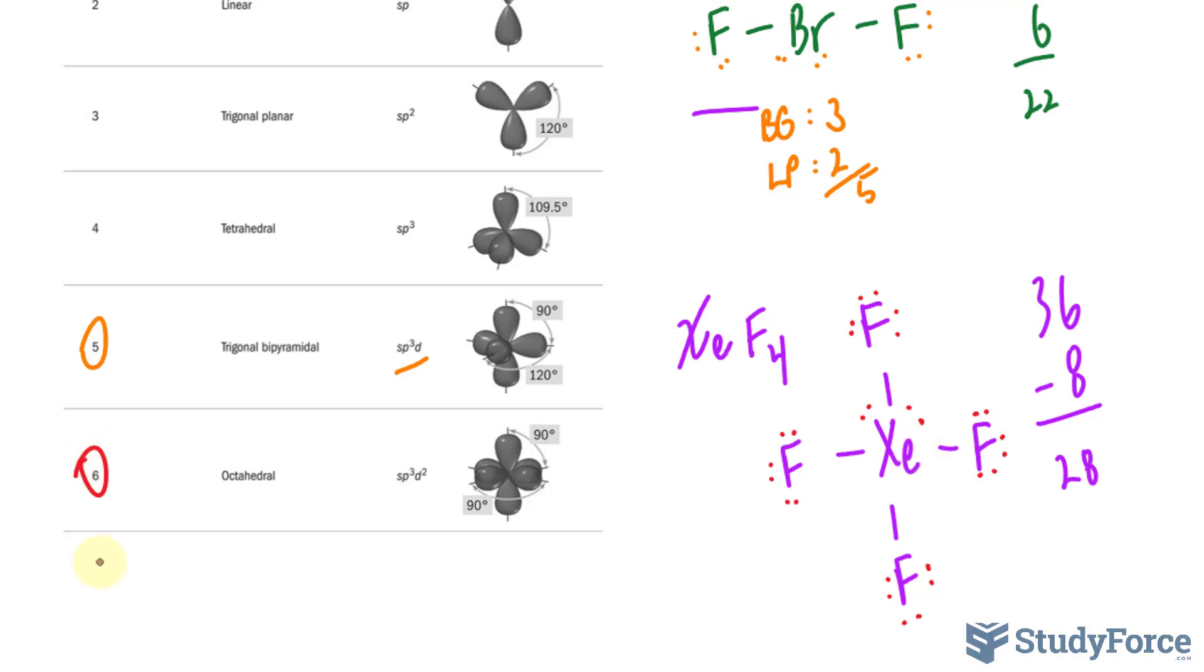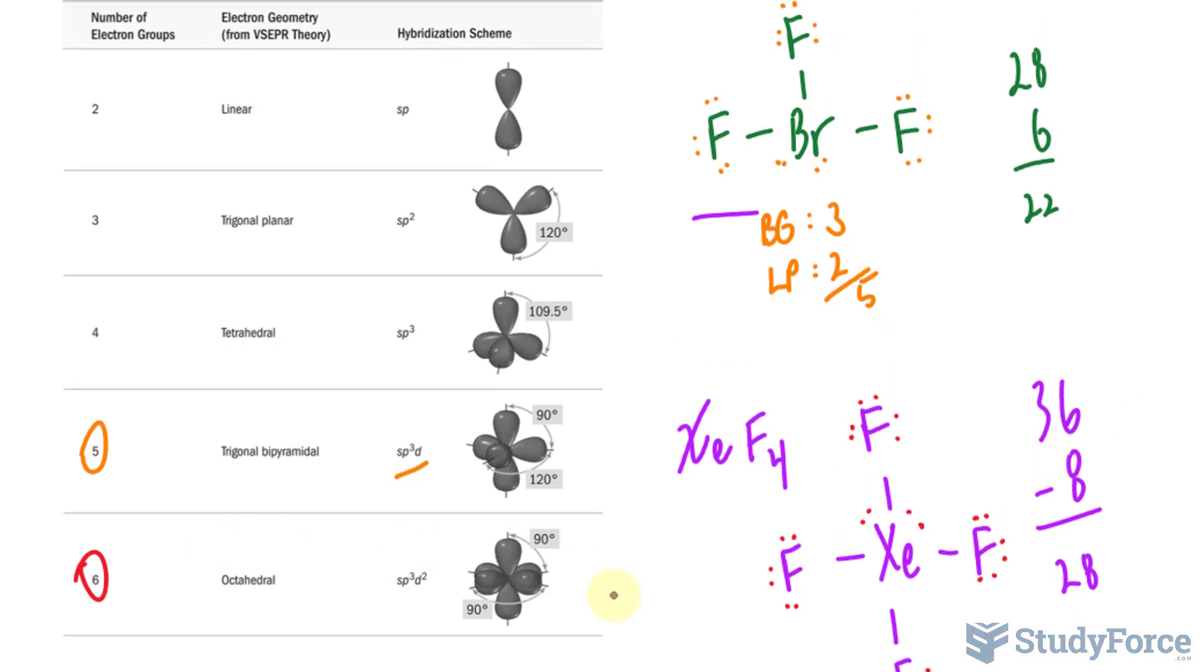We'll focus right here. And what we're dealing with is an octahedral. So that last row right here is the octahedral, and the hybridization scheme is sp3d2. Let's go ahead and draw this out now.